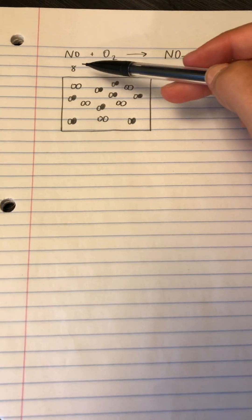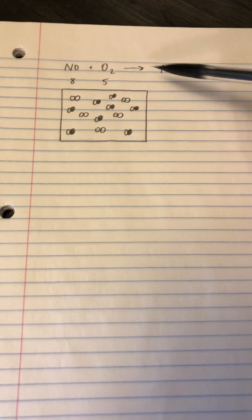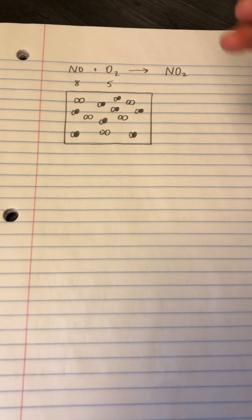So in the problem it tells you that nitrogen monoxide and oxygen, which is O2, reacts to form nitrogen dioxide. Now this is not balanced. So the first thing you need to do is balance the equation.